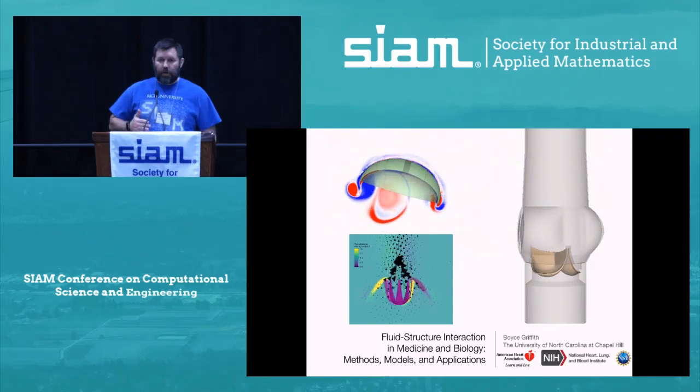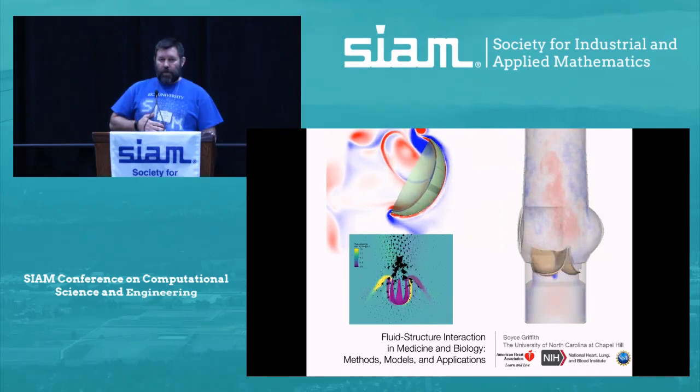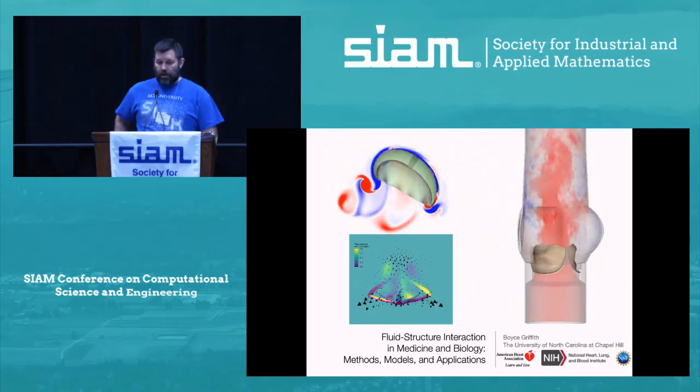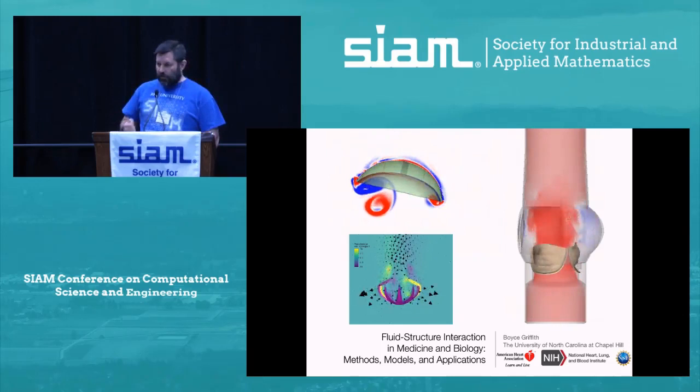Good afternoon, and welcome to the fourth plenary of the Sci-MCSE 2019. It is my distinct pleasure to introduce Professor Boyce Griffith, Associate Professor of Mathematics at UNC Chapel Hill. He's going to talk to us today about fluid structure interaction in biology and medicine. He is also an adjunct associate professor in the joint UNC-NC State program in biomedical engineering, as well as a pillar of the computational medicine program at UNC.